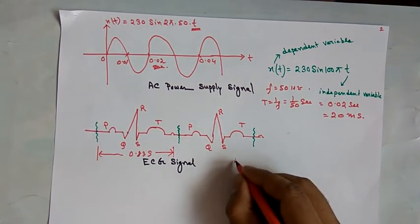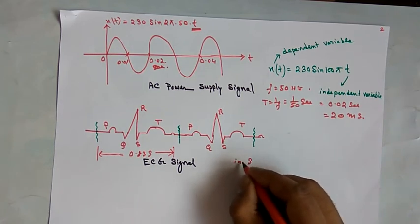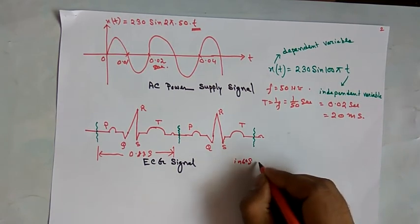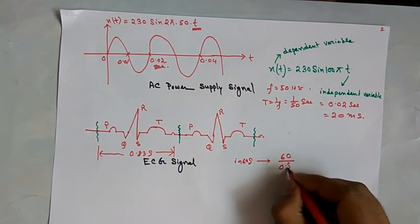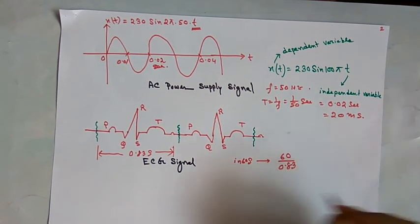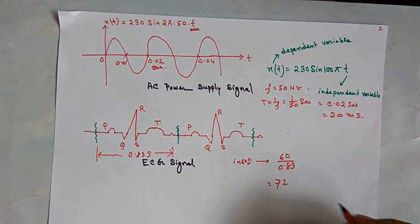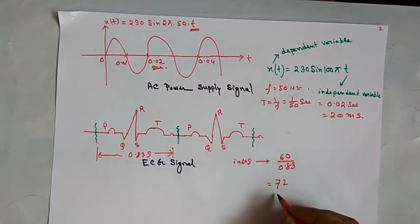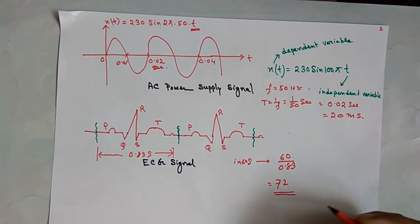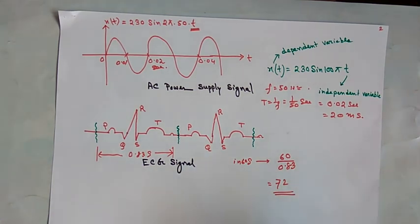In 60 seconds, the number of complete cycles will be 60 divided by 0.83, which is approximately 72 complete cycles. That is why our normal heart rate is 72 beats per minute. The ECG signal is also a continuous-type signal. There are also different types of signals — continuous time signals and discrete time signals — which we will see later.